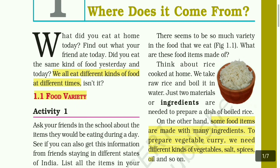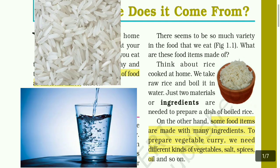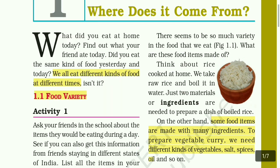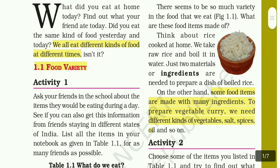What kind of food is cooked at home? We take raw rice and boil it in water. Just two materials or ingredients are needed to prepare a dish of boiled rice. Boiled rice uses only two ingredients: raw rice and water. Some food items are made with many ingredients.